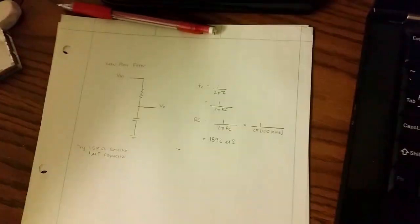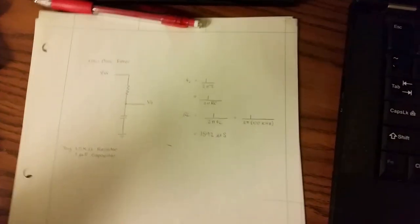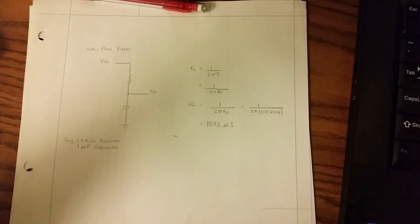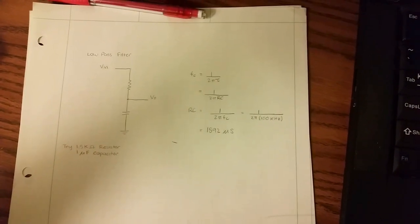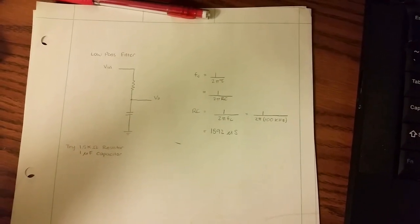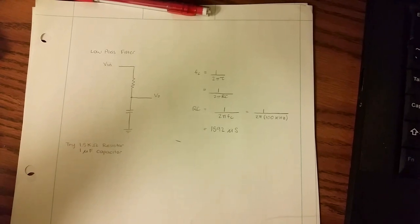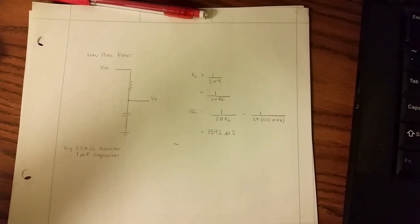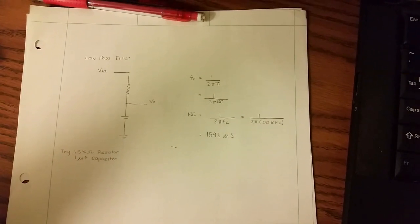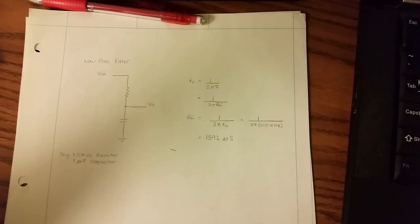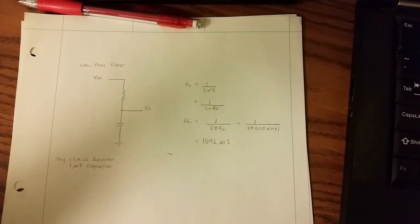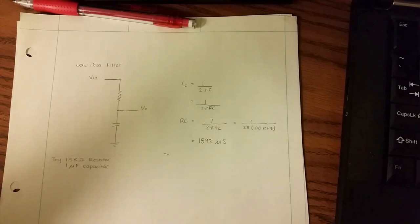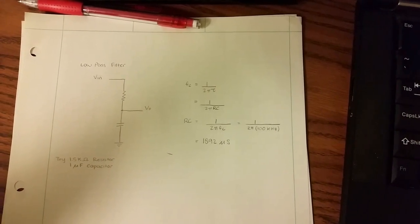Next, I did a low pass filter. This is a super basic RC circuit. There's my formula over there. So I have to basically choose that resistor value and that capacitor. I don't want to use a small capacitor because then the capacitor capacitance of the rest of the circuit will mess up stuff.